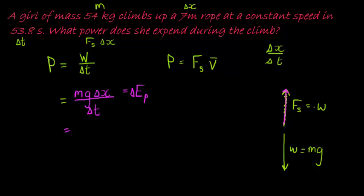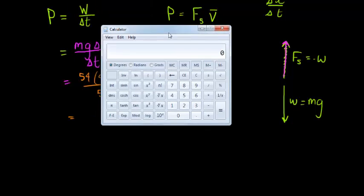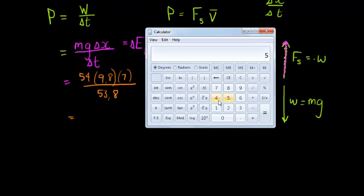And her mass is 54 kilograms. Gravity we take at 9.8. Displacement is 7 meters. And the change in time is 53.8 seconds. Let's use the calculator. We get 54 times 9.8 times 7, divided by 53.8.